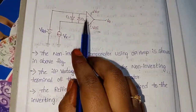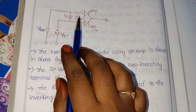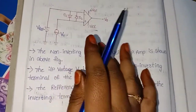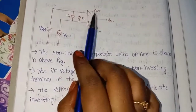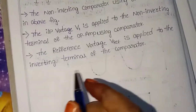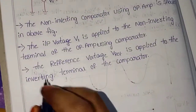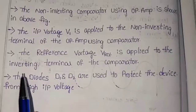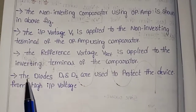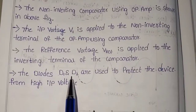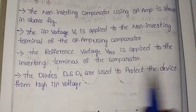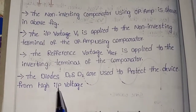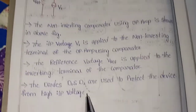Diodes D1 and D2 are used as protecting diodes for the circuit. The diodes D1 and D2 are used to protect the device from high input voltage.